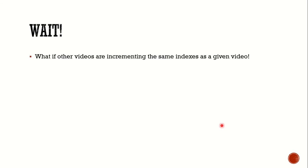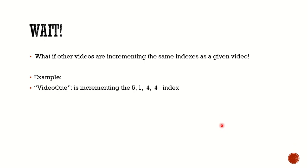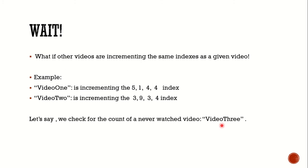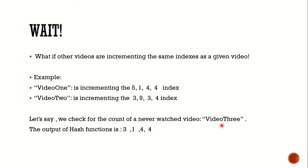But wait — there seems to be a problem. What if other videos are incrementing the same indexes as a given video? Of course that is a possibility. Video 1 increments indexes 5, 1, 4, 4 and video 2 increments indexes 3, 9, 3, 4. What if we ask about a never-watched video — video 3 — whose hash function outputs are 3, 1, 4, 4? Then we are running into a problem.